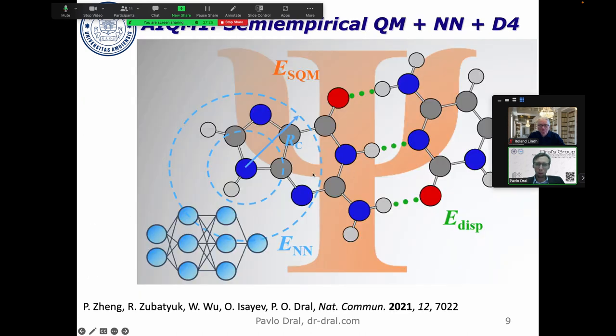If you combine these approaches you get AIKM1. The speed is semi-empirical speed - for C60 it's just 14 seconds to optimize, while if you use coupled cluster it's 70 hours just for single points, and DFT will take you also much longer.